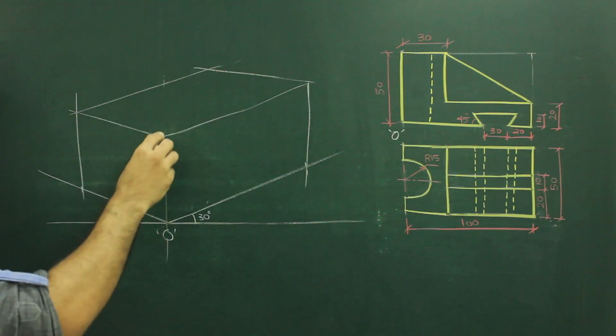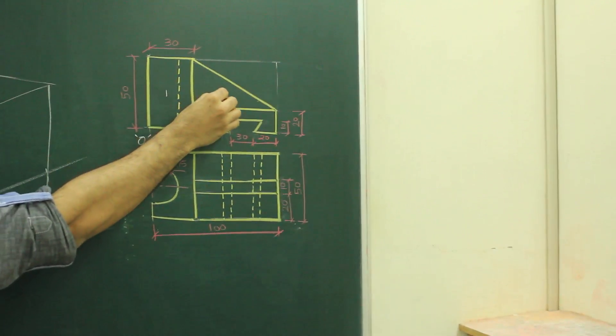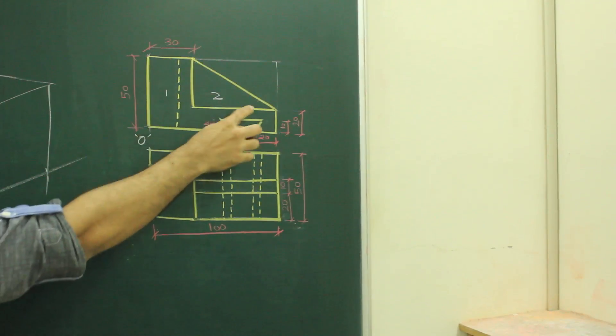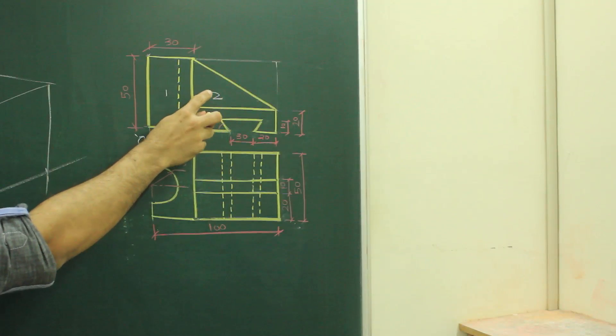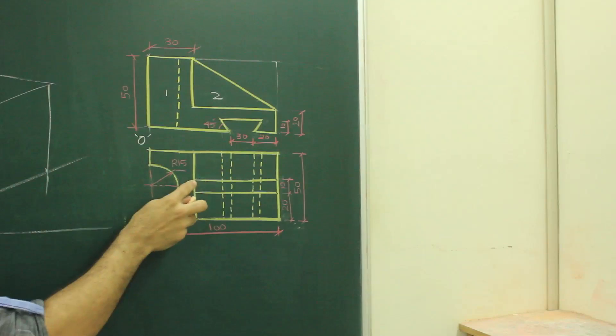After drawing this, you see, there are how many parts in front view? Two parts, one and two. So this part one is this and part two is here. If I see this part two in top view, it's this part.